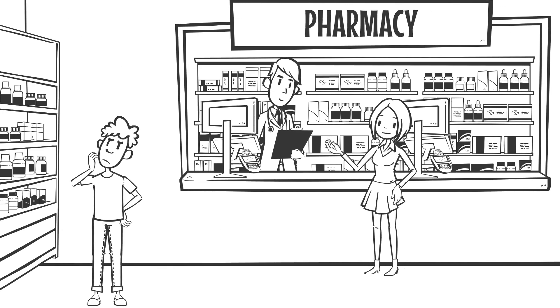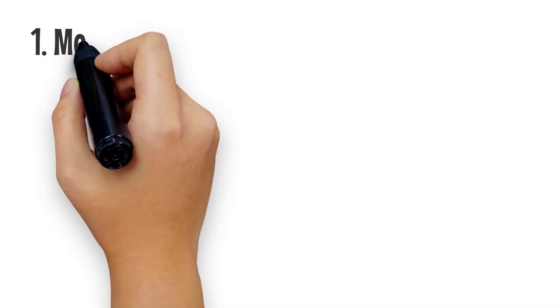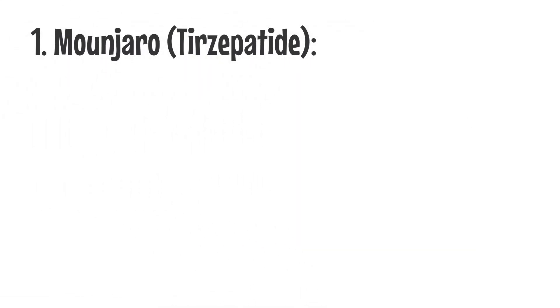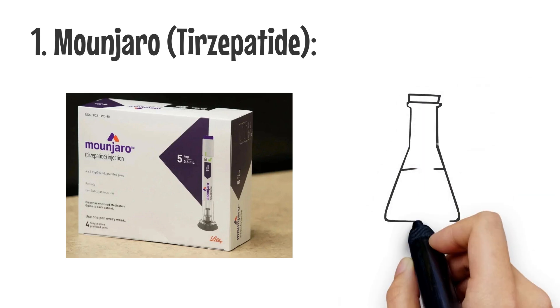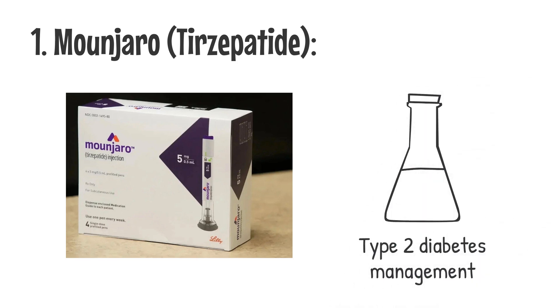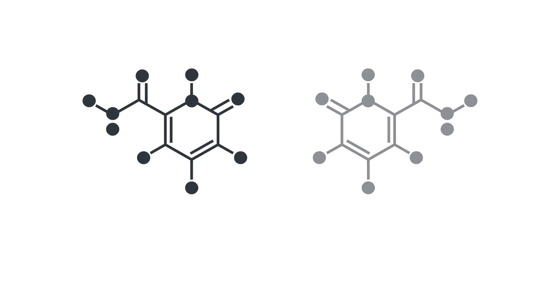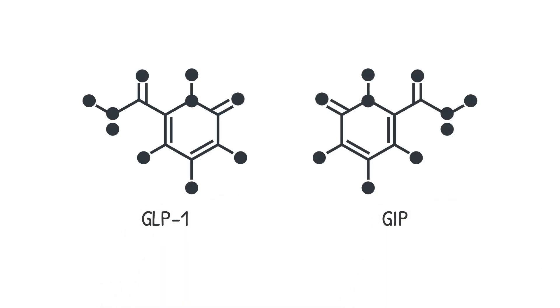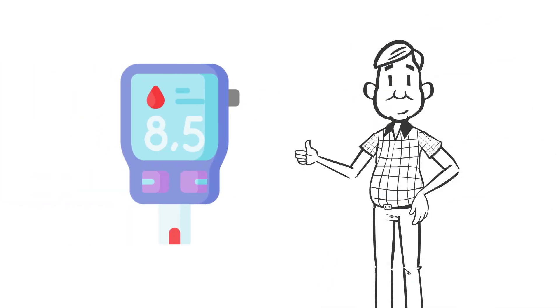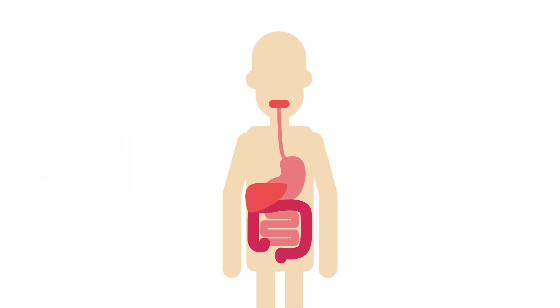Let's start with a quick overview of each medication. First is Monjaro, Tirzepatide. Monjaro or Tirzepatide is the newest of the three and was originally developed for type 2 diabetes management. What makes Monjaro unique is that it targets two hormones, GLP-1 and GIP. These hormones help regulate blood sugar levels and influence appetite, making it a dual-action medication.